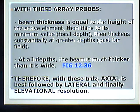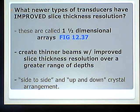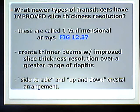Eventually, a solution was developed. This is called a one-and-a-half dimensional array. These newer transducers create thinner beams with improved slice thickness resolution over a greater range of depths, using a side-to-side and up-and-down crystal arrangement — recalling the idea that a circular shape creates the best lateral and slice thickness resolution.